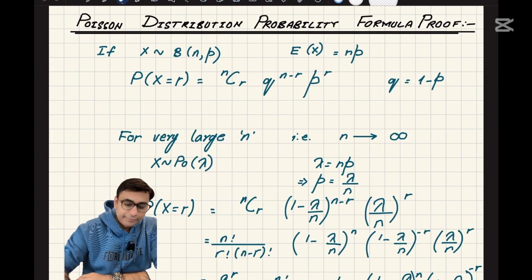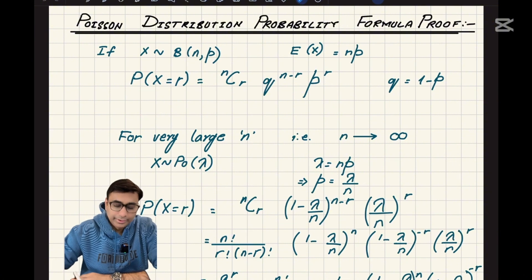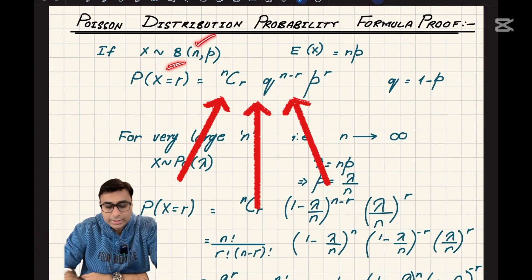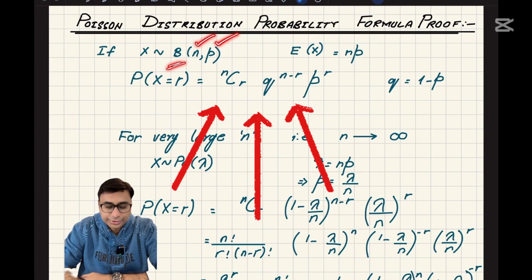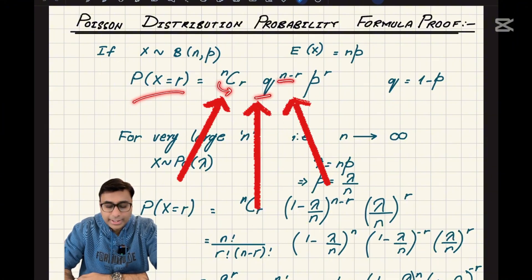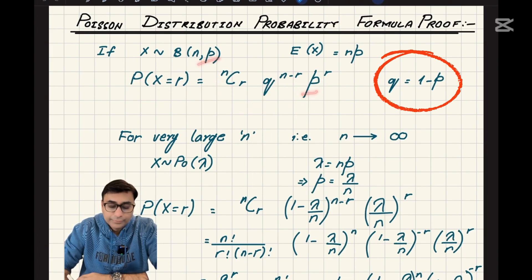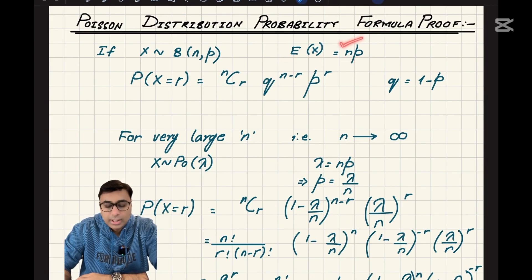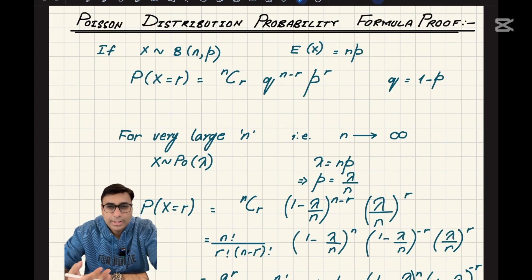Before we jump into the derivation of the formula, we must recall: if a random variable x follows a binomial distribution with n total number of trials and p the probability of success of each trial, then you can calculate the probability of x = r as nCr times q to the power n minus r times p to the power r, where q = 1 - p. The expectation of the binomial distribution is E(x) = n times p.